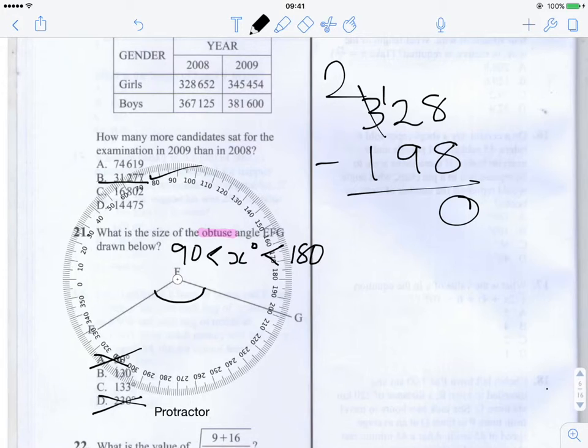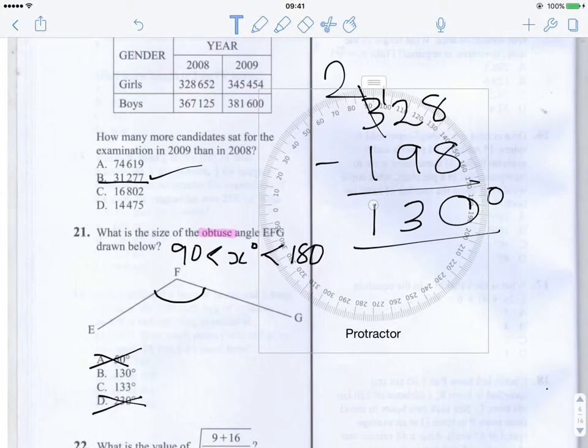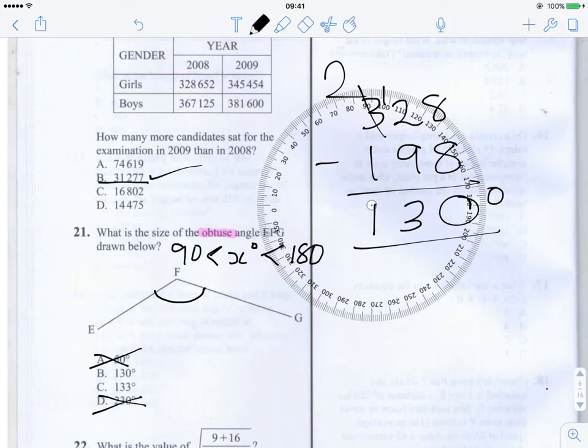0 carry a 1 here, get a 3, and I get a 1 here, so I get 130 degrees as my answer. So the answer to this question is B, 130 degrees.